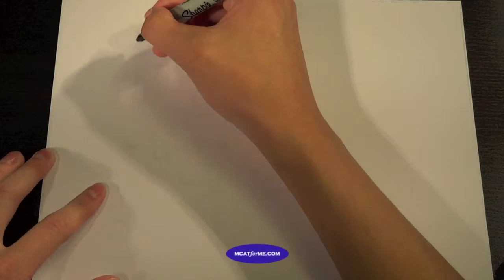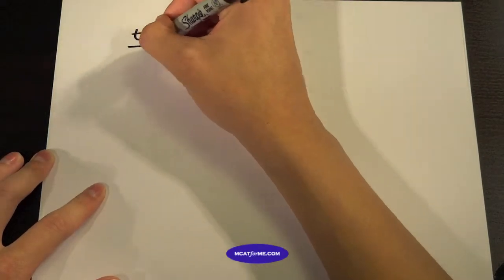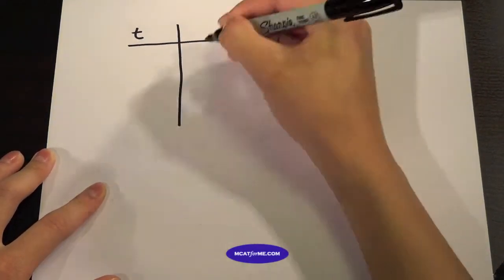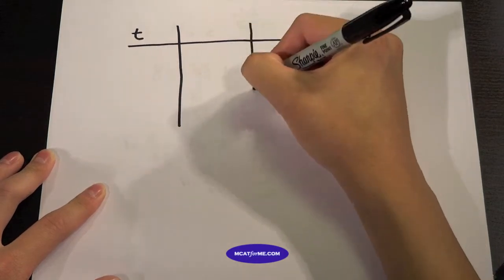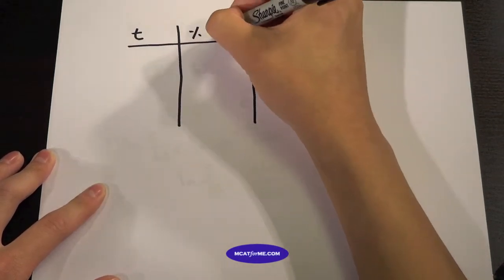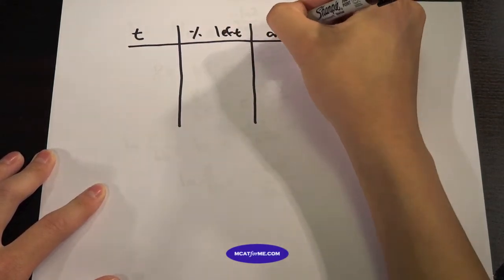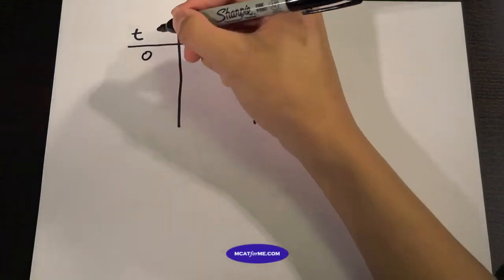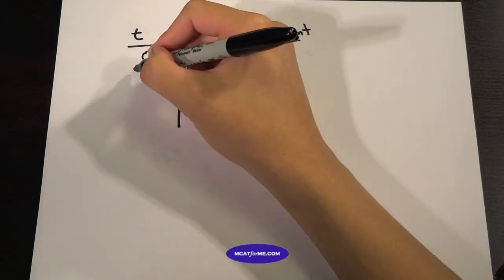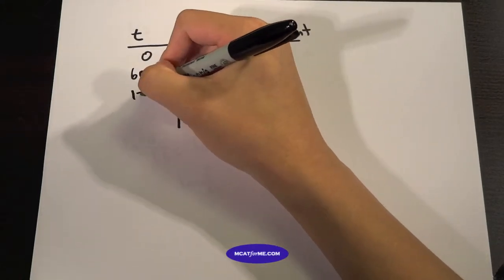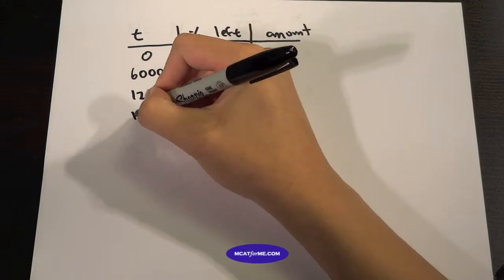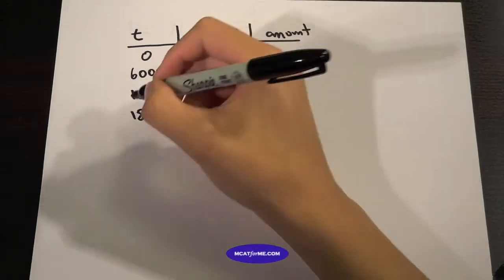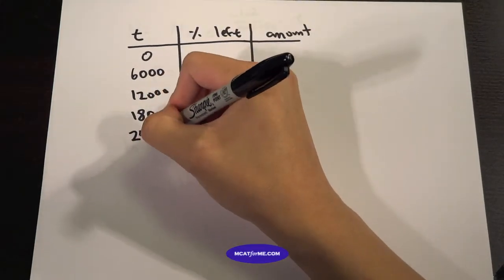So this is what we do. Every single time we're dealt with these questions, we make a little table like this. So we start off with 0 and we increment this by the number of our half-life. So our half-life was 6,000. And we just add on 6,000 every single time.